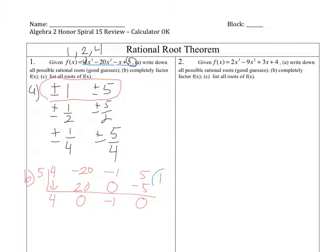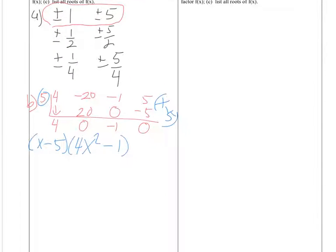So we divided by x minus 5, because of the plus 5 out there. That's x minus 5, and here we've got 4x squared plus 0x minus 1, which happens to be factored by difference of two squares. So that would be x minus 5 times 2x plus 1 times 2x minus 1. Part B is done.